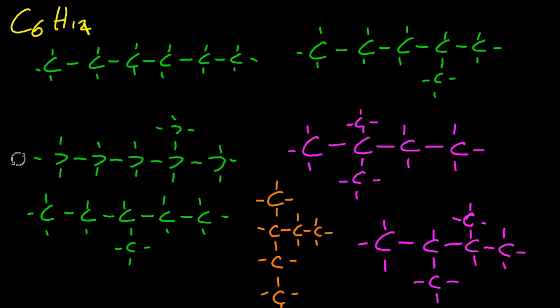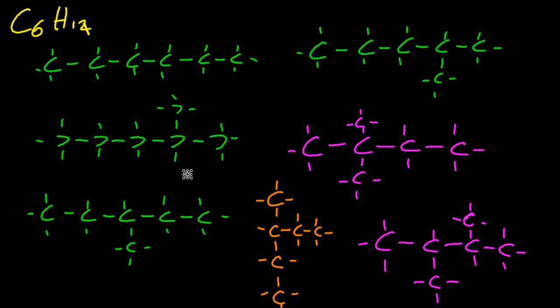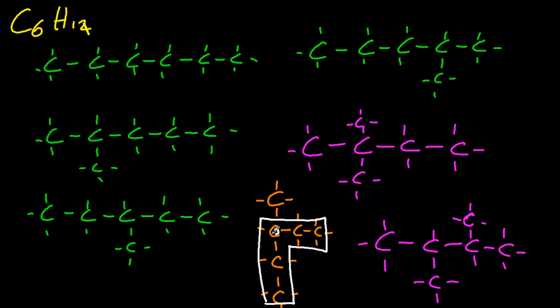So that one there, if I rotate it, looks very similar to one on the top right-hand corner. So that one doesn't count. That one's wrong. Take that out. And the orange one, well that contains five carbons in a row and a methyl on the third and so does that one. So they're both the same. So I'll cross that one out as well.